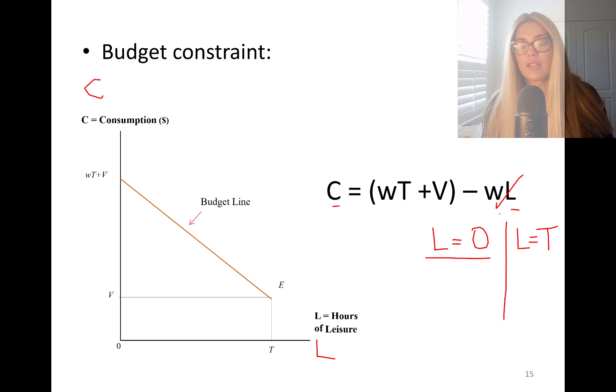Case one, leisure is zero hours. So you put zero here. This will cancel out. W times zero, zero. So consumption is going to be equal to W times T plus V. If leisure measured here from zero to T, if leisure is zero, consumption is equal to W times T plus V. This is your y-intercept of your budget line.